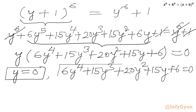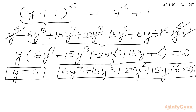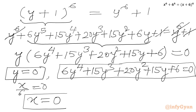We begin with the first equation: y equal to 0. Since y was our substitution and x over 6 was y, we have x over 6 equal to 0. Multiplying both sides by 6, we get our first real solution: x equal to 0.